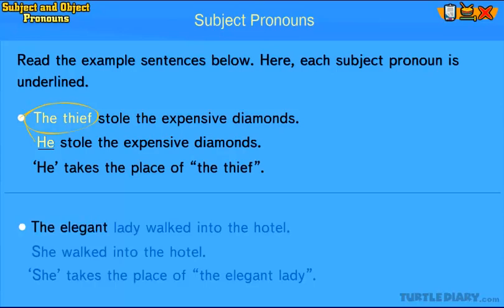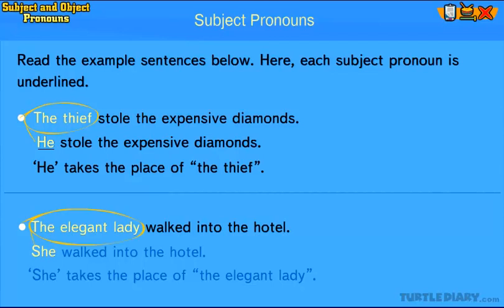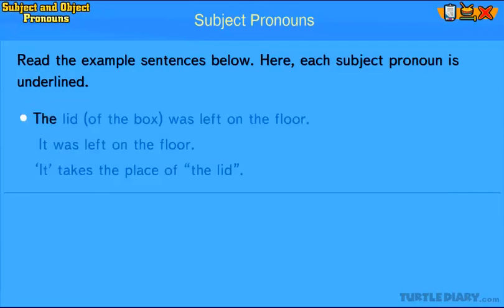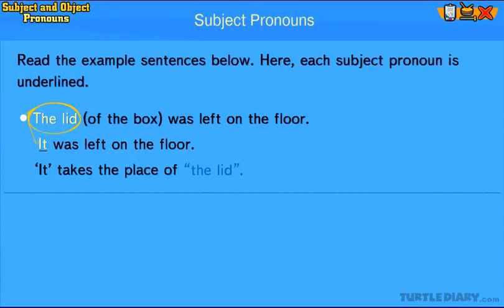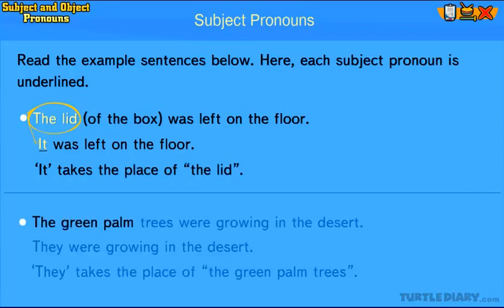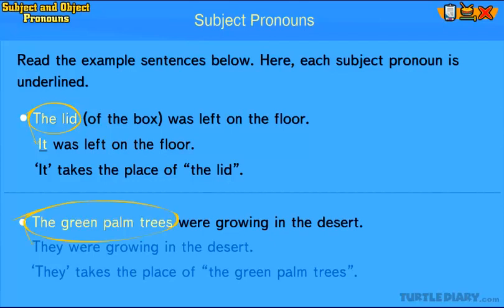The elegant lady walked into the hotel. She walked into the hotel. She takes the place of the elegant lady. The lid of the box was left on the floor. It was left on the floor. It takes the place of the lid. The green palm trees were growing in the desert. They were growing in the desert. They takes the place of the green palm trees.